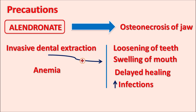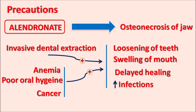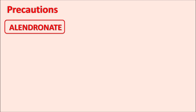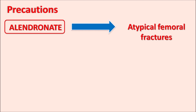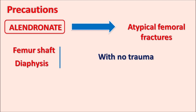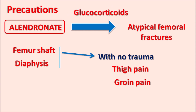Osteonecrosis of the jaw is more pronounced in patients with anemia, poor oral hygiene, or cancer. Another important precaution is that alendronate can increase atypical femoral fractures — fractures produced in the bone without any significant trauma or physical damage — particularly in the femur shaft and femur diaphysis. Alendronate can produce thigh pain and groin pain in patients. Glucocorticoids, when given with alendronate, can further increase the risk of atypical femoral fractures.